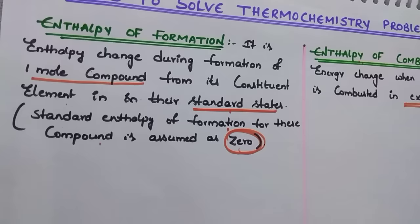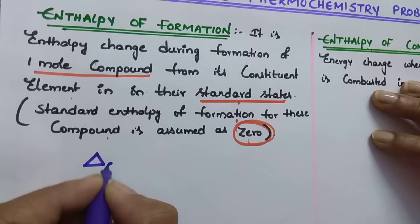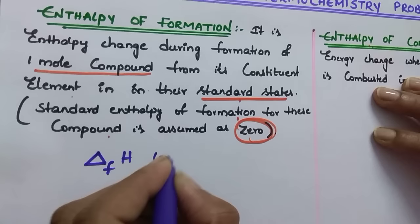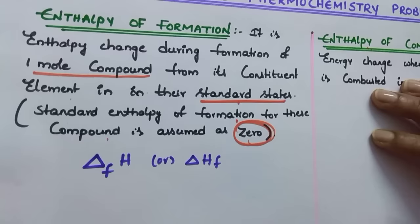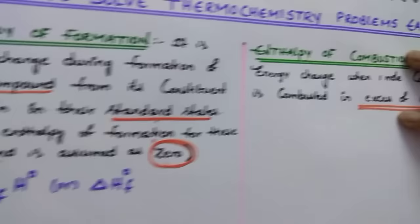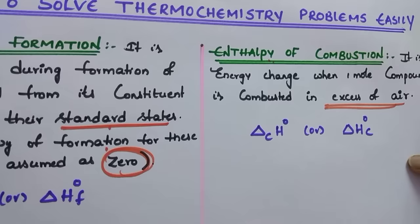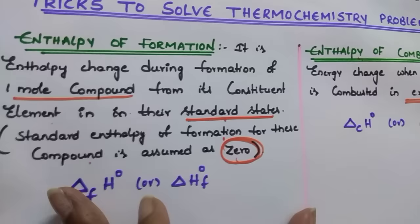How do we represent these? Enthalpy of formation is ΔHf or ΔfH. For standard enthalpy of formation, just add the naught symbol — ΔfH°. In the same way, enthalpy of combustion is ΔHc or ΔcH, and standard enthalpy of combustion is ΔcH°.